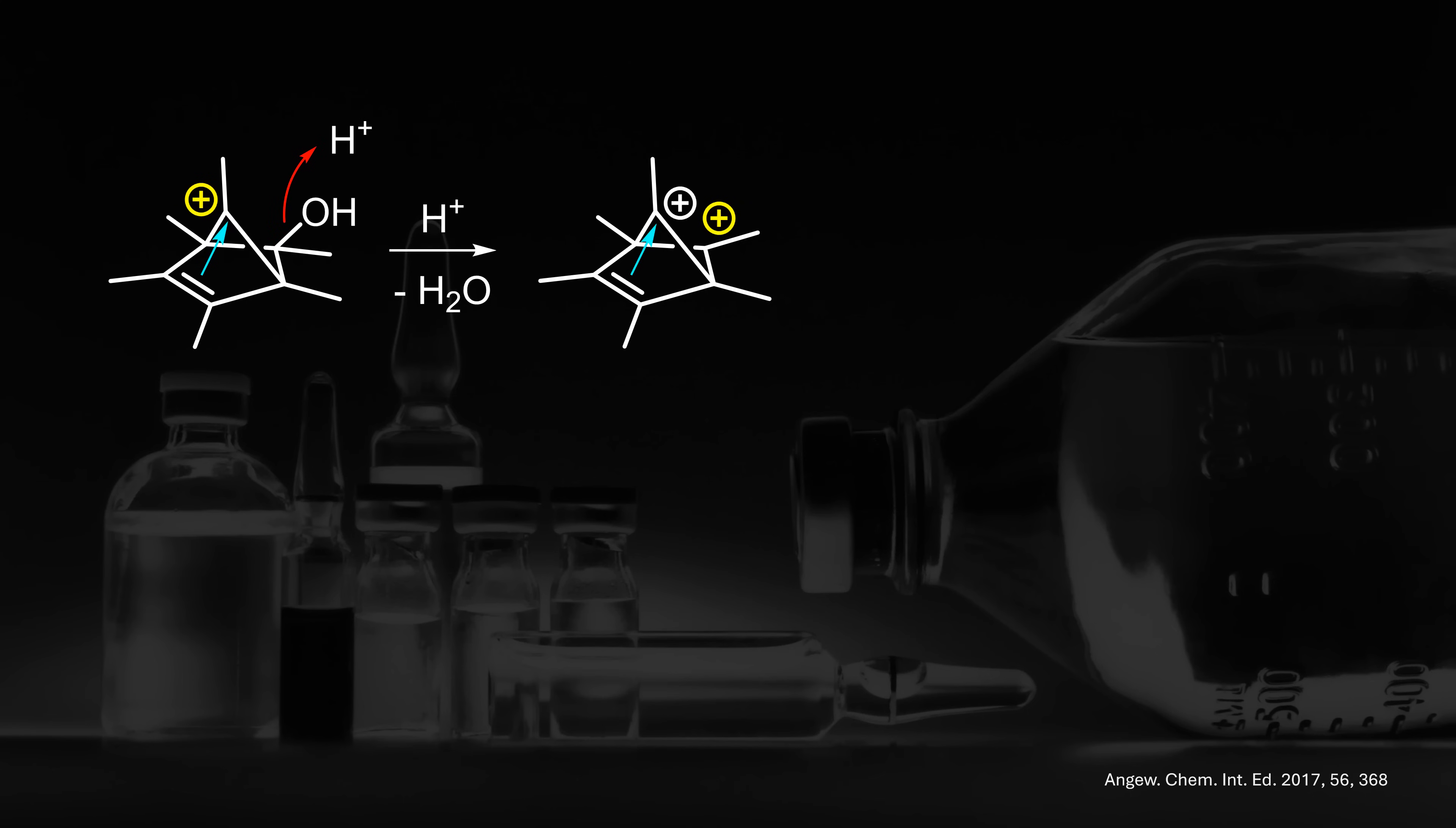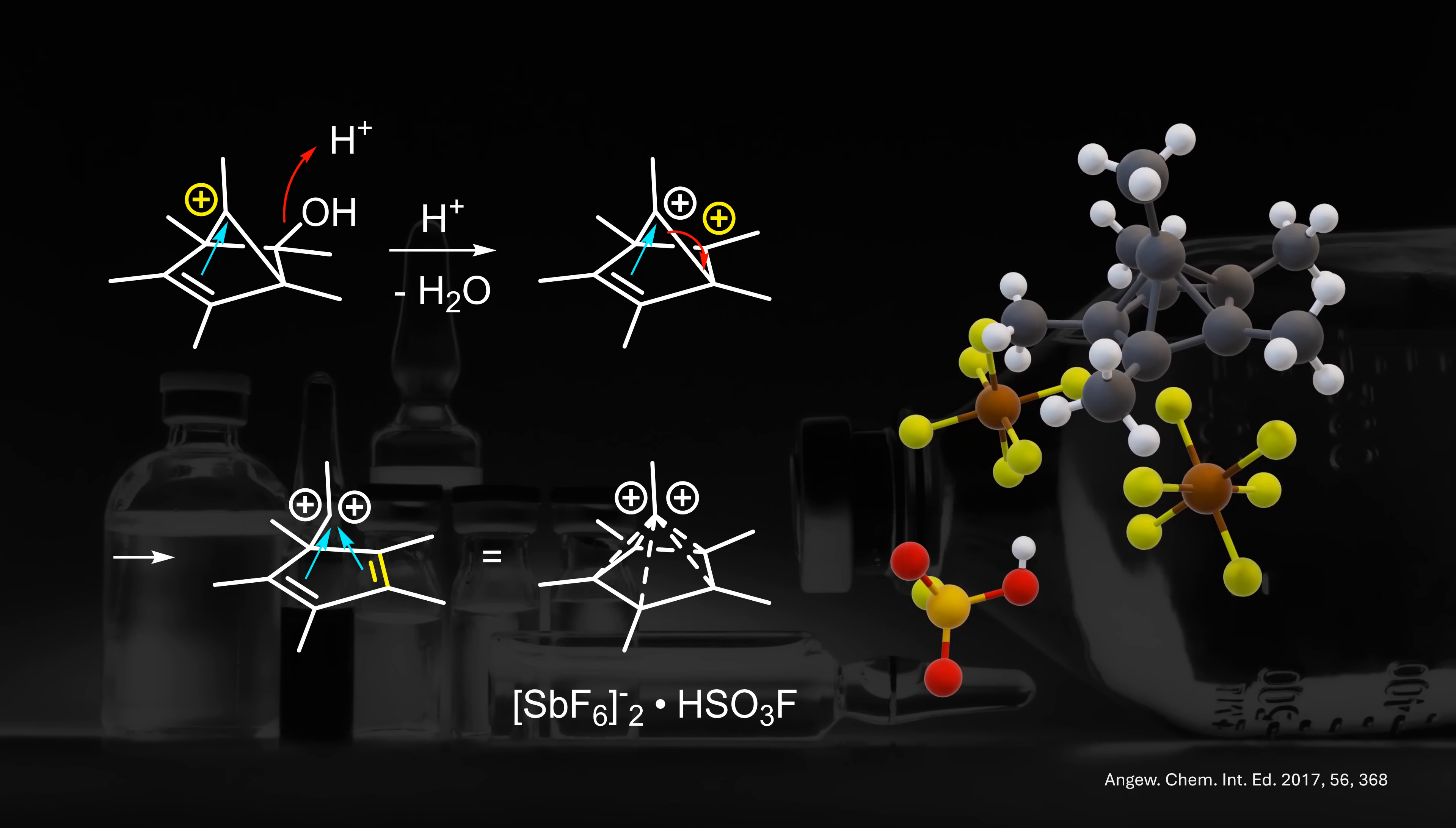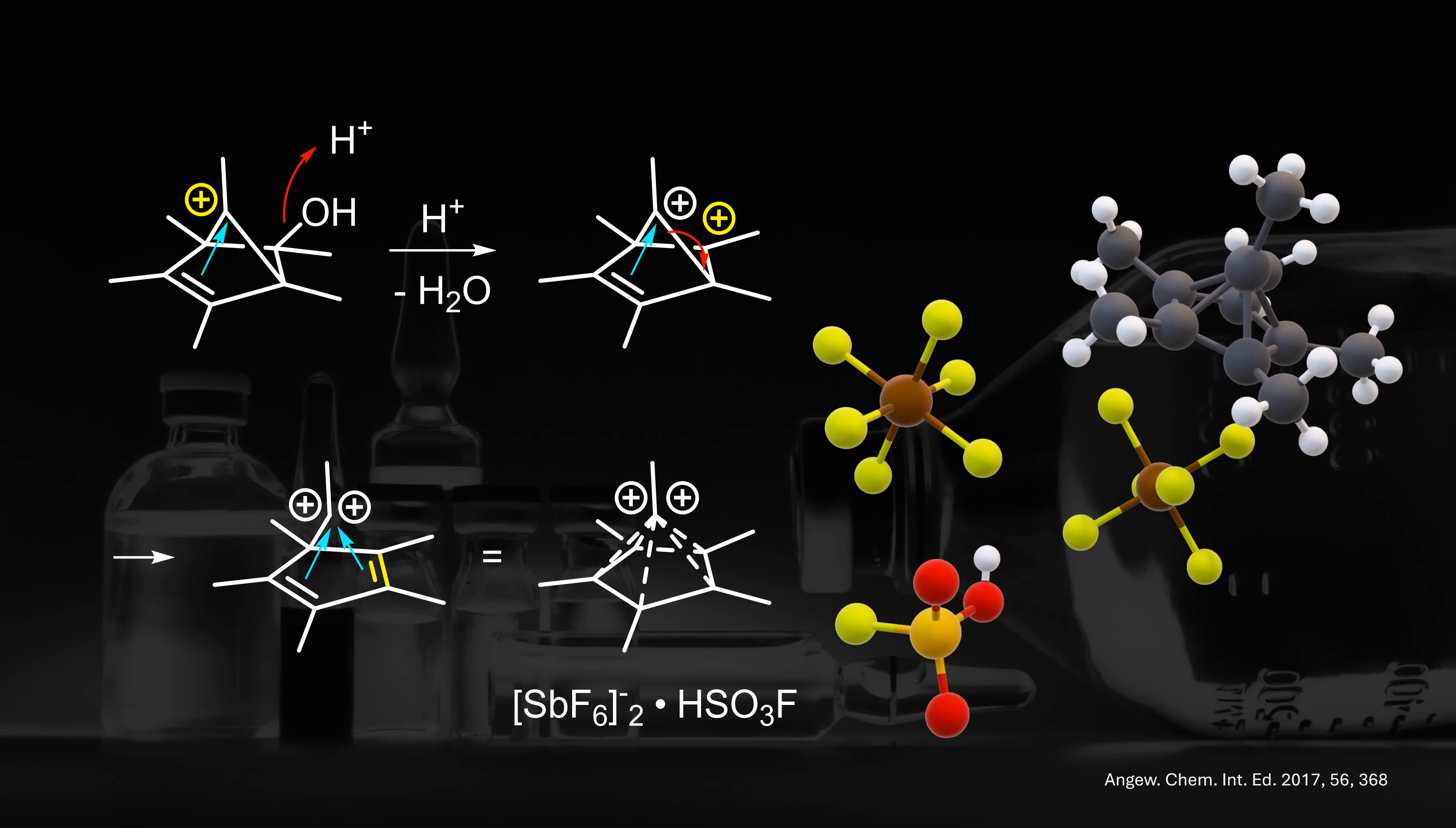This intramolecular rearrangement is very fast, but remember we are still in a soup of excess superacid. Thus, another protonation finally gets rid of the oxygen, giving another carbocation. In similar fashion, we again oxidize the top carbon and create a cyclopentadiene at the bottom of the pyramid.